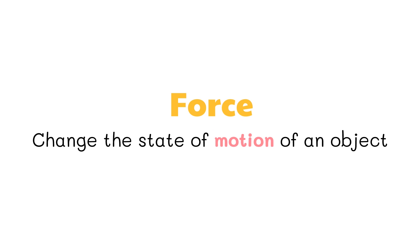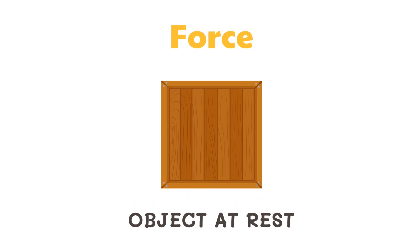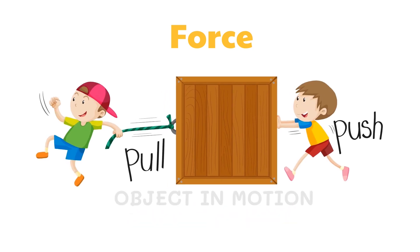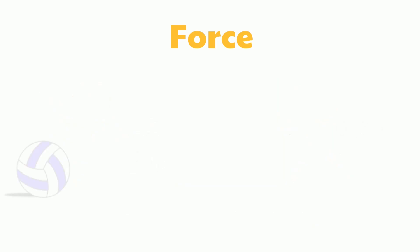In the previous lessons we learned that force can change the state of motion of an object. If an object is at rest, it can be moved by exerting force on it. If an object is moving, it can be made to move faster or stopped by applying force on it.